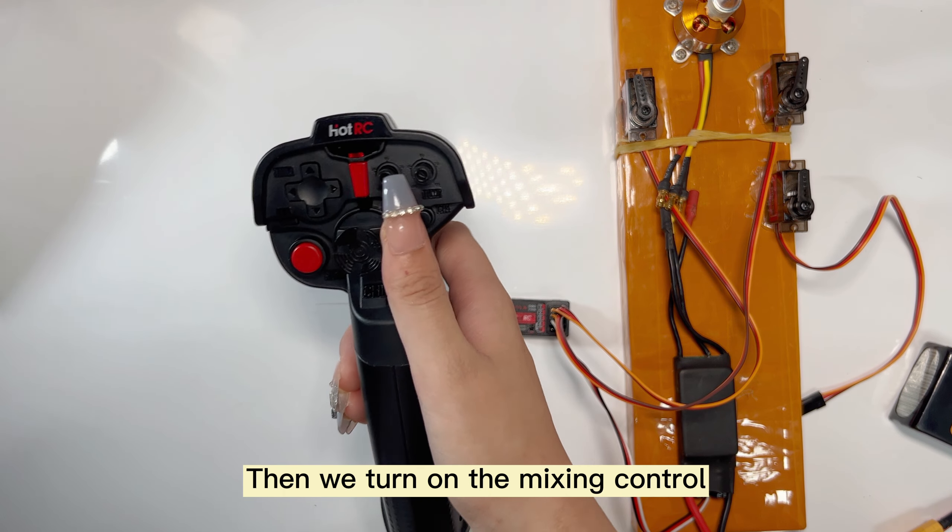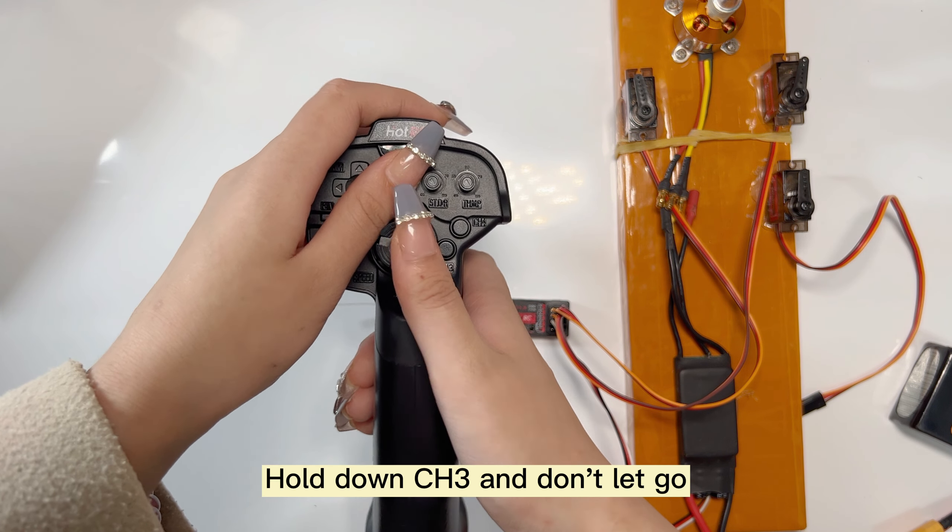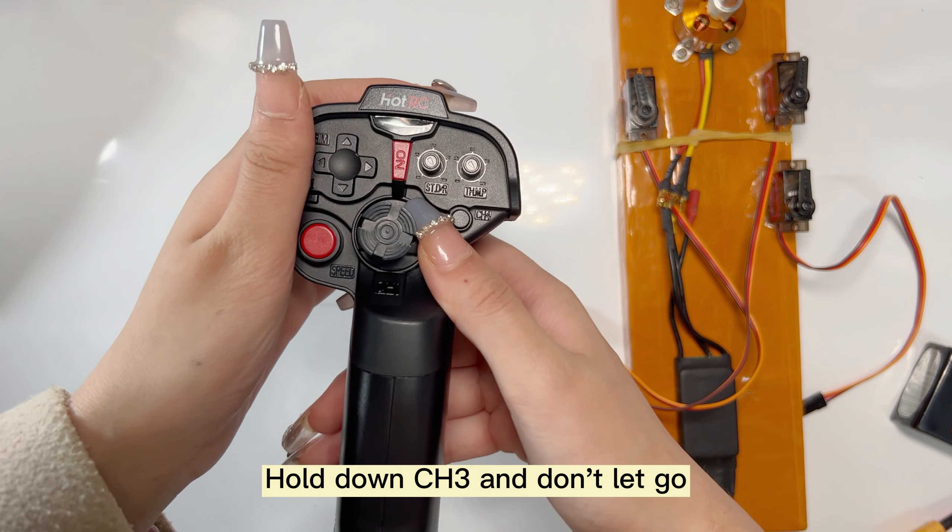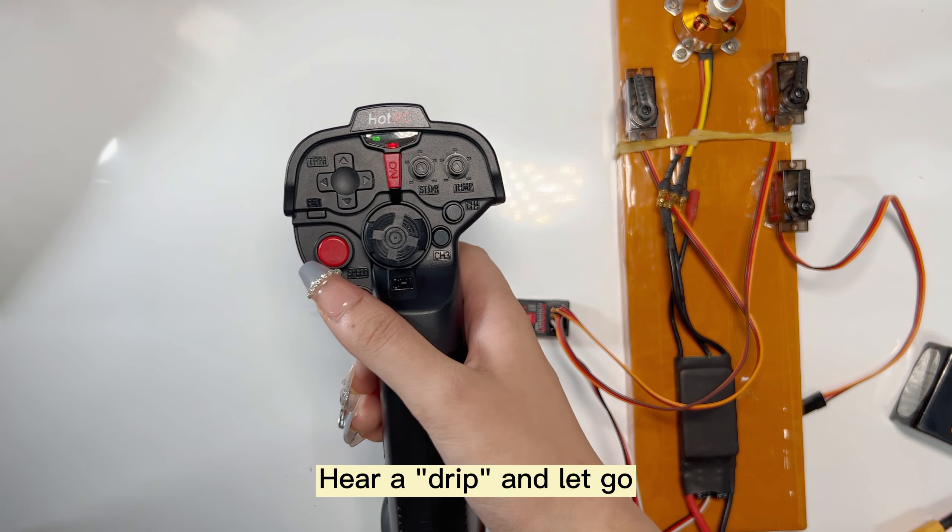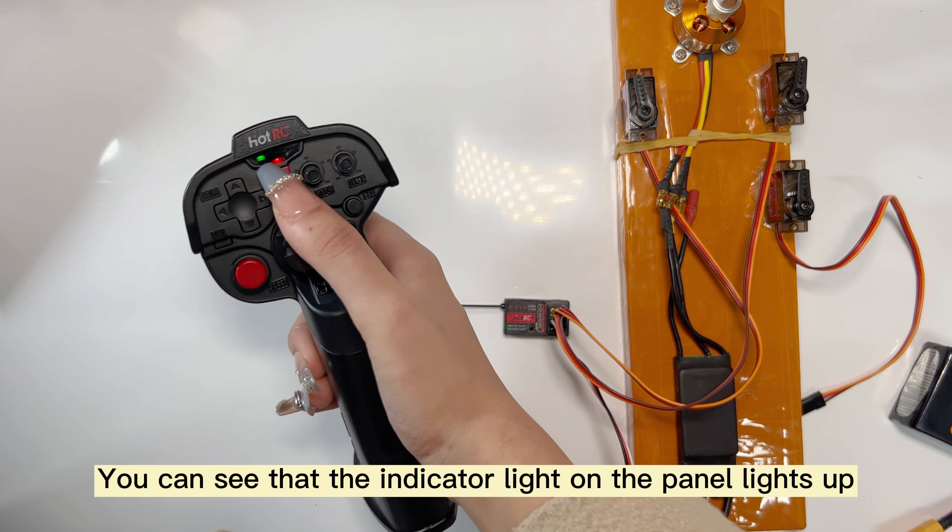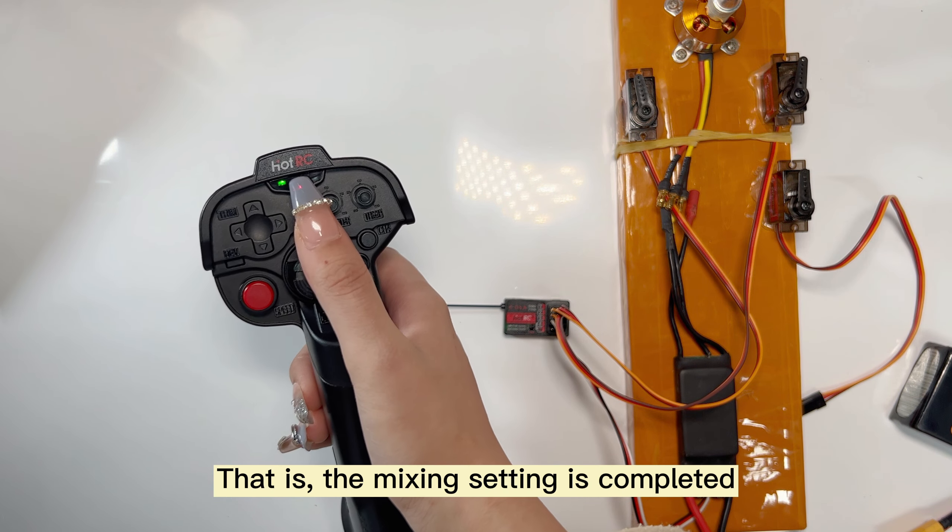Now we turn on the mixing control. First shut it down. Hold down CH1 and don't let go. Turn on the remote control at the same time, then release. You can see that the indicator light on the panel lights up. The mixing setting is completed.